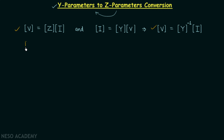So this is what we have after performing the comparison: the impedance matrix is equal to the inverse of the admittance matrix. Remember this important point — we will use it while solving questions.